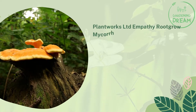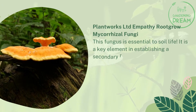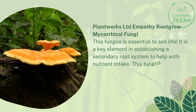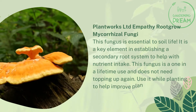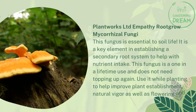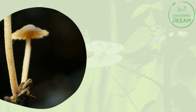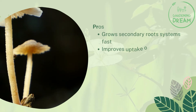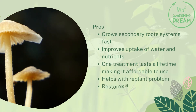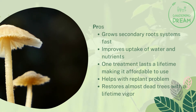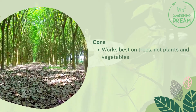Plantworks LTD Empathy Root Grow Mycorrhizal Fungi is essential to soil life and is a key element in establishing a secondary root system to help with nutrient intake. This fungus is a one-time use product and does not need topping up again. Use it while planting to help improve plant establishment, natural vigor, as well as flowering and fruiting. Pros: grows secondary root systems fast, improves uptake of water and nutrients, one treatment lasts a lifetime making it affordable, helps with replant problems, and restores almost dead trees with lifetime vigor. Cons: works best on trees, not plants and vegetables.